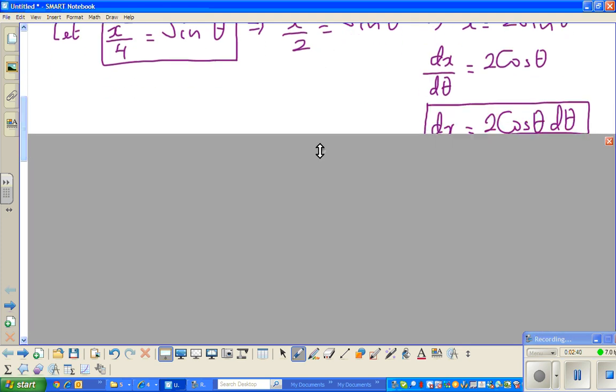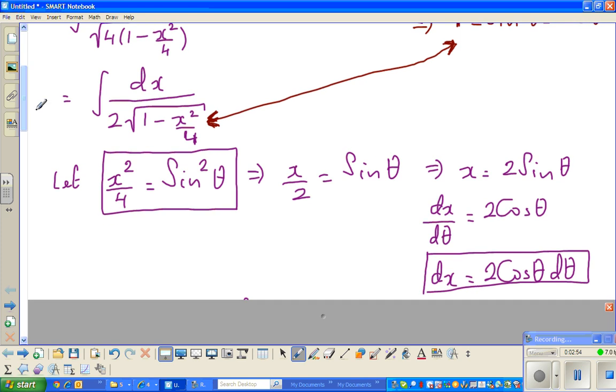So what's the next step? If dx by dθ is 2 cos theta, dx would be 2 cos theta dθ. Let us look back. You can substitute dx as 2 cos theta dθ and you can substitute x squared over 4 as sine squared θ. Everything will change with respect to theta.